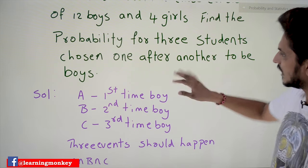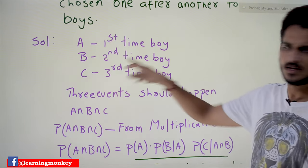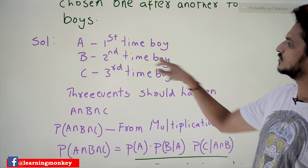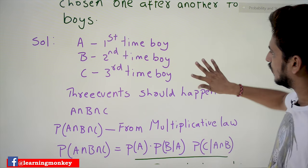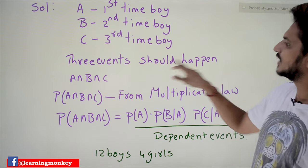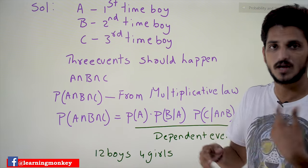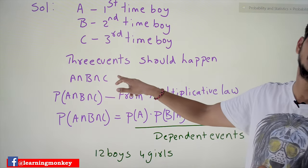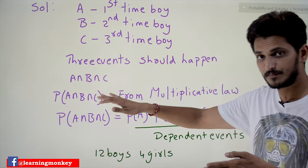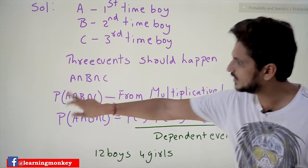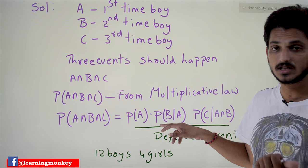Coming to our first event: event A is the first selection is a boy, event B is the second selection is a boy, and event C is the third selection is a boy. We need all three events to happen, so we need P(A ∩ B ∩ C). From the multiplicative law discussed in our last class, for three events: